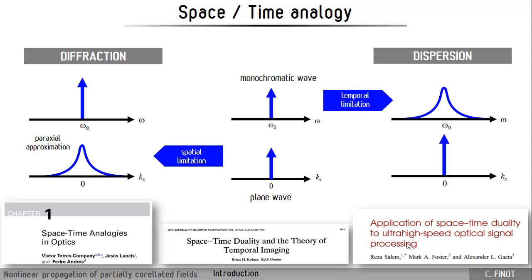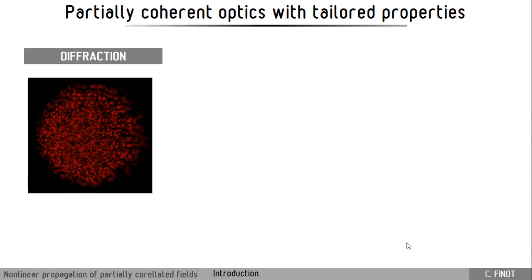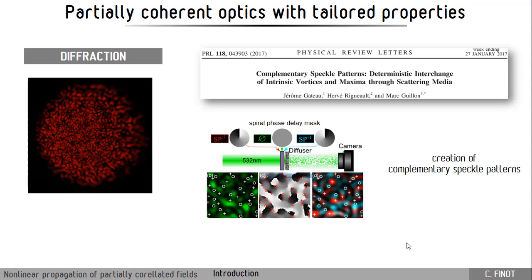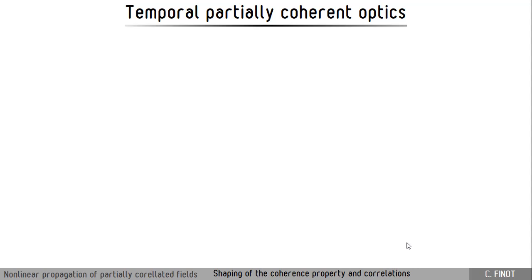Diffraction and dispersion are ruled by the same kinds of phenomena. This is well documented and has been used for many applications in the temporal domain, mostly dealing with coherent signals. Here the idea is to explore what happens when the signal is partially incoherent. In the field of diffraction this is very well known - this is what is called speckles, and it is possible to shape this speckle. For example, there has been quite recently work made by one of our co-authors that has shown it was possible from a speckle to generate two correlated speckles using a spiral phase delay mask, enabling the creation of two complementary speckle patterns.